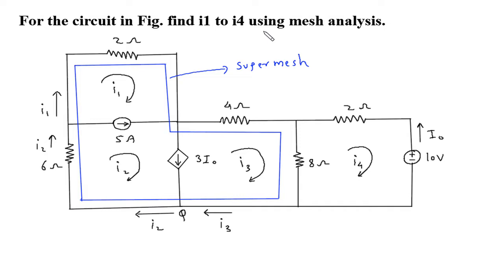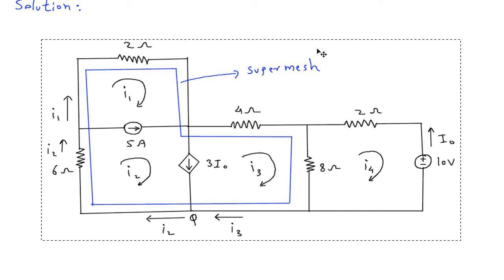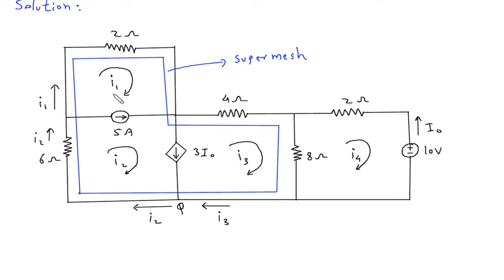For the circuit in the figure, find I1 to I4 using mesh analysis. First, we will redraw the circuit. As we can see, mesh 1, mesh 2, and mesh 3 form a super mesh. So we will apply KVL to the super mesh.